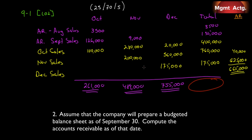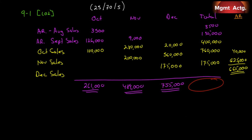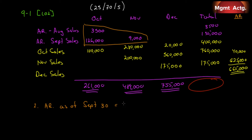The second part of the question asks us to compute accounts receivable as of September 30th for the budgeted balance sheet. It's not asking for year-end — it's asking as of September 30th. We've already seen that accounts receivable as of September 30th is the sum of these three amounts: $3,500 still outstanding from August sales, and $135,000 outstanding from September sales, totaling $138,500. If it asked for December 31st, it would be $665,000.